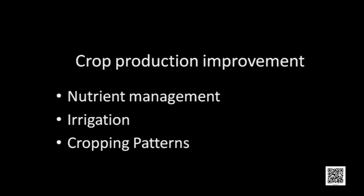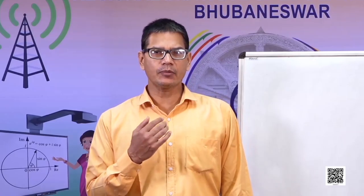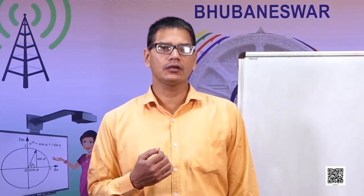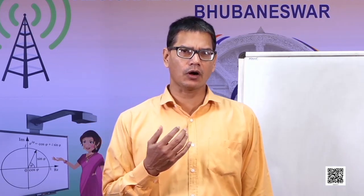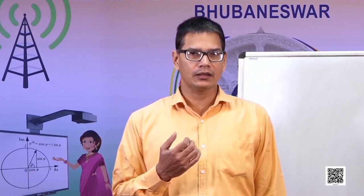Crop production improvement includes nutrient management, irrigation, and cropping patterns. Nutrient management means giving or enriching the soil with various nutrients required for the proper growth of the crop. Irrigation means supplying water to the crop. There are various cropping patterns, which we will discuss later on.